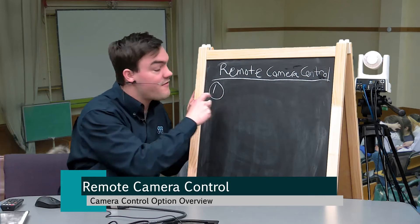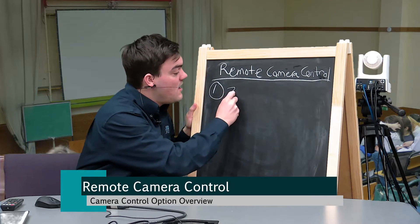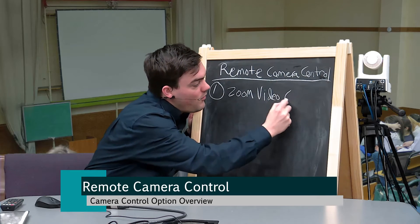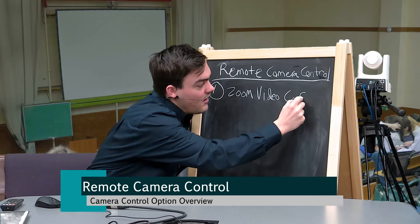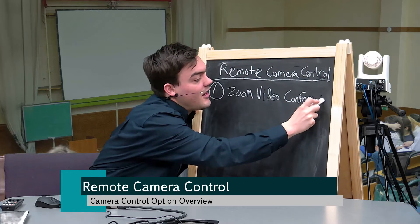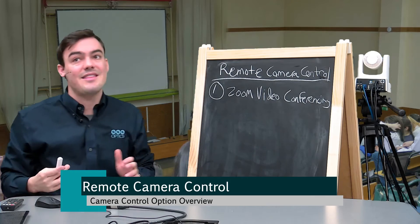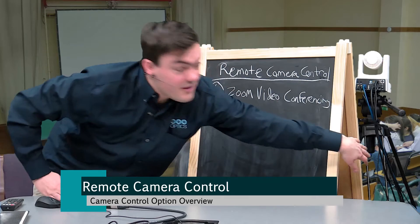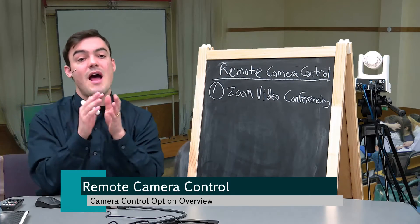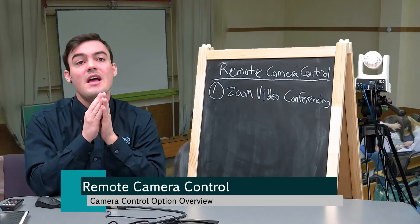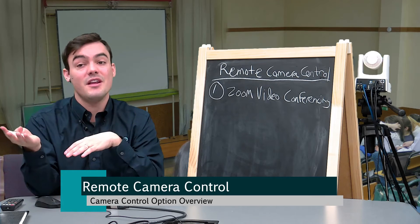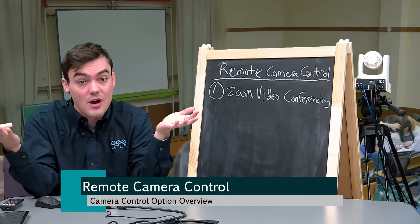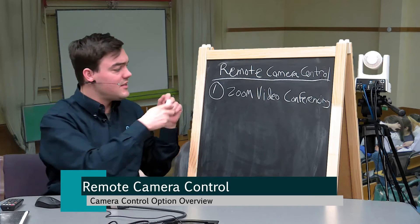The first option — and this is my favorite — is Zoom video conferencing, which we'll show in the next video. Within Zoom video conferencing you can control our PTZOptics cameras. You just plug in the USB directly to your computer, you get video and control, and you can bring in the video really easily from anywhere in the world by connecting over a video conference call. Super easy.